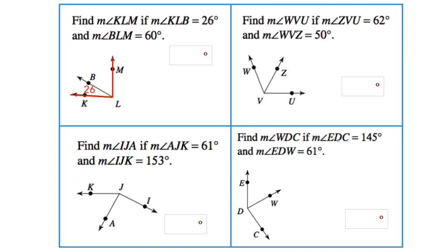Angle KLB measures 26 degrees, and the measure of angle BLM is 60 degrees. So we're going to apply the angle addition postulate. m∠KLB + m∠BLM = m∠KLM. We're going to add 26 plus 60 to get 86 degrees.